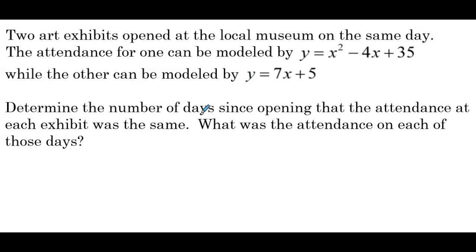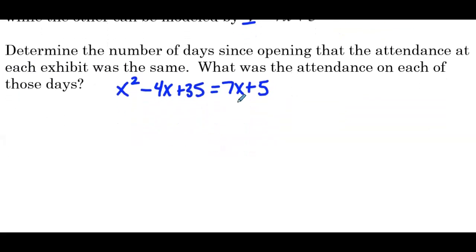So let's first find the number of days. So we'll solve for x here by substituting x squared minus 4x plus 35 in for y. So we have x squared minus 4x plus 35 equals 7x plus 5. So we have a quadratic equation. We need set equal to zero. So x squared, we'll subtract 7x from both sides, so minus 11x. And then we'll subtract 5 from both sides, so plus 30 equals zero.